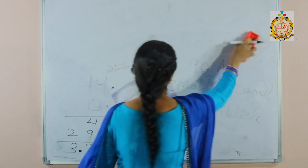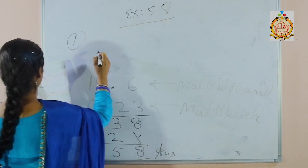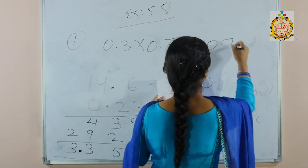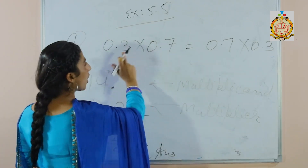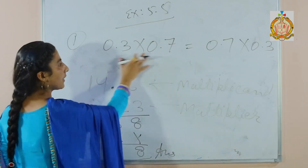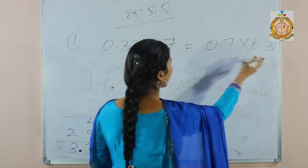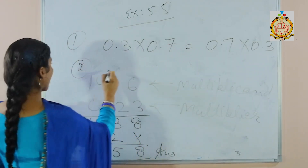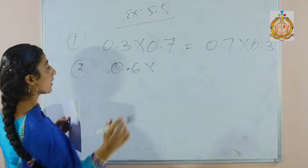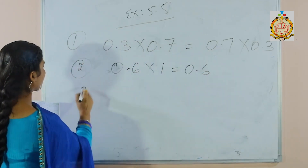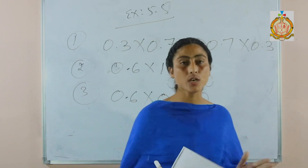Now last exercise 5.5, which is based on the properties of multiplication. The first property, part C: when we multiply two decimal fractions or a decimal fraction by a whole number, the order of factors doesn't affect the product — 0.3 × 0.7 equals 0.7 × 0.3, the product will be the same. The second property: the product of a decimal and 1 is the decimal itself — 0.6 × 1 = 0.6. The third property: the product of a decimal and 0 is 0. Students, this is all about your chapter. Prepare your chapter. Thank you and have a nice day.